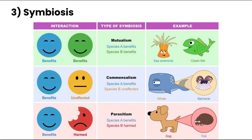Finally, the last type is parasitism, where one species is benefiting and the other is harmed. For example, ticks that live on dogs — the tick gets the benefit of feeding on the dog's blood as a food source, but the tick can spread diseases to the dog, such as Lyme disease.